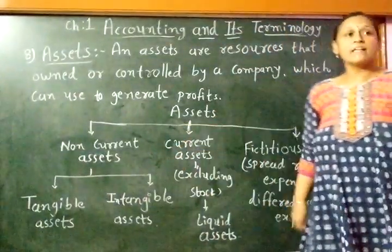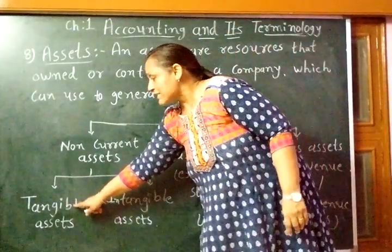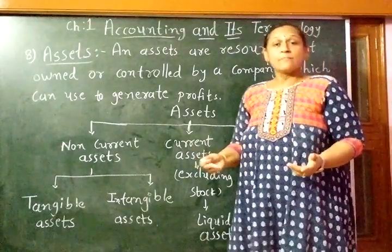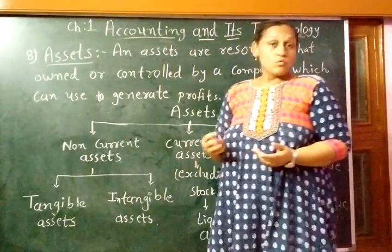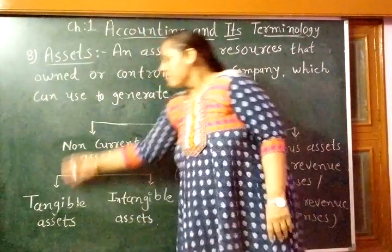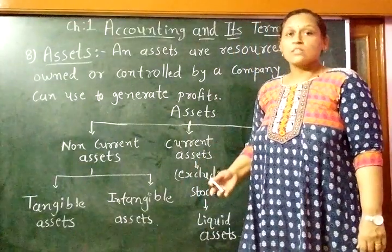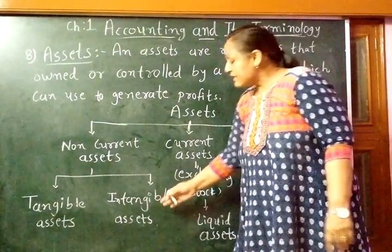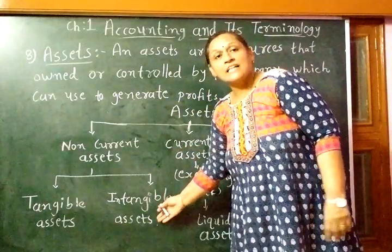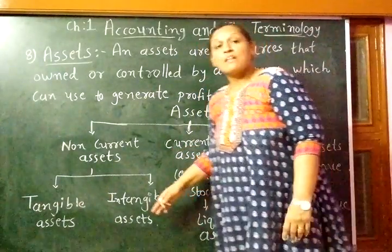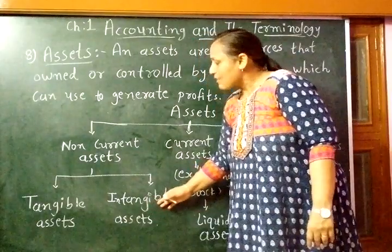Non-current assets are divided into two categories: tangible assets and intangible assets. Tangible assets are those assets that physically exist — that can be seen or touched — such as building, vehicle, furniture, etc. Intangible assets are those assets that do not physically exist and cannot be touched or seen, such as patent, trademark, copyright, goodwill, etc. The benefit of intangible assets can be taken in the business, but their physical existence is not there.